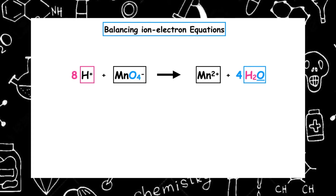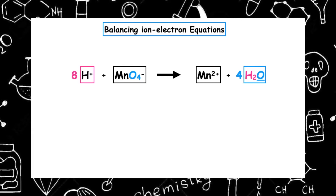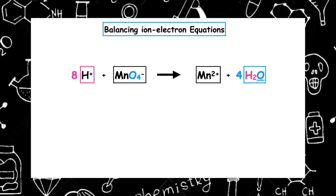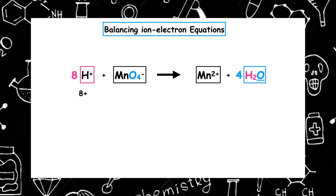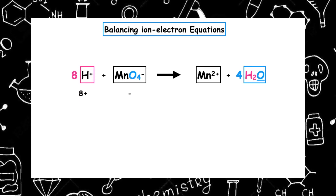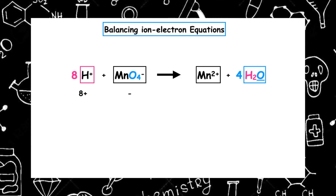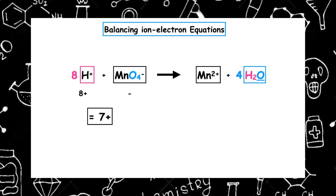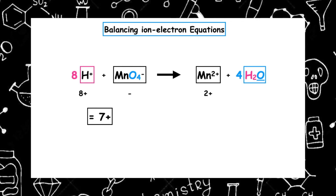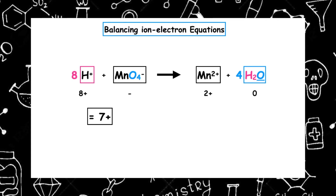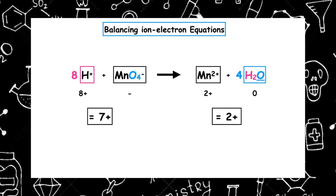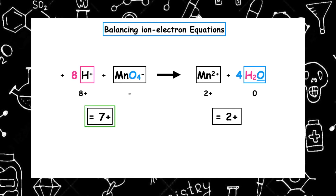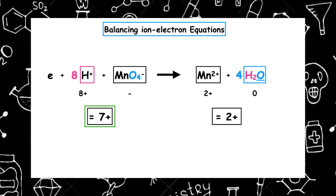Now we look at the overall charge, working left to right. For the hydrogen ions, one plus times eight gives an overall charge of eight plus. For the permanganate, we've got one minus, so eight plus take away one gives an overall charge of seven positive. The manganese is two plus, and water doesn't have a charge, so the overall charge on the product side is two plus. Seven plus is higher than two plus, so that's where we're going to add the electrons.